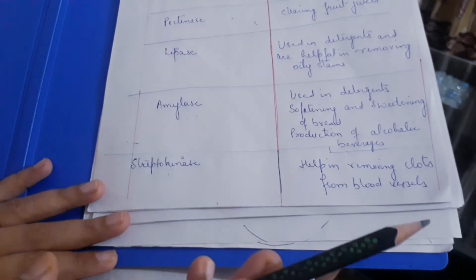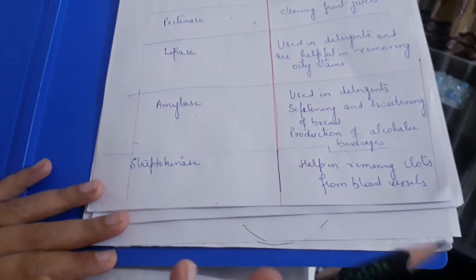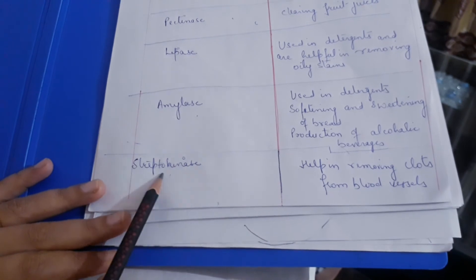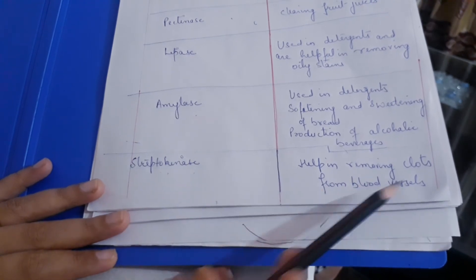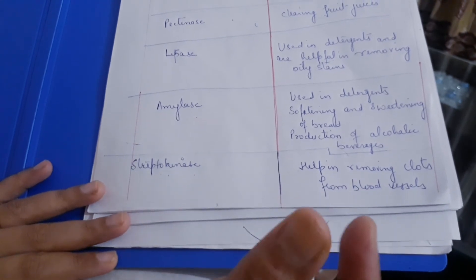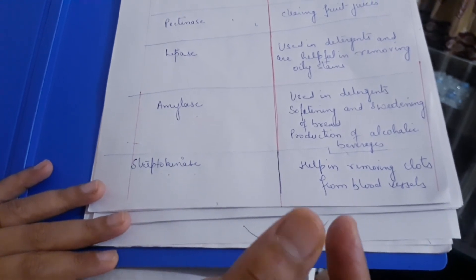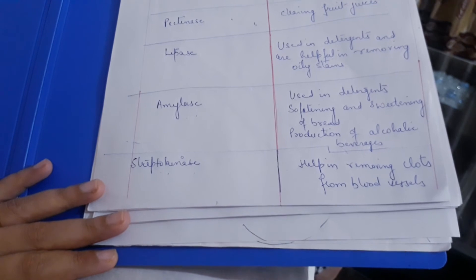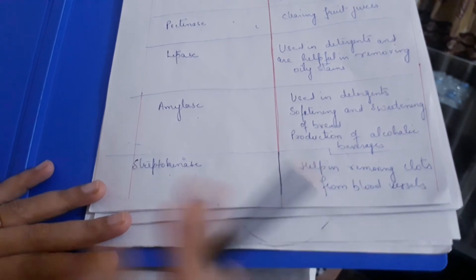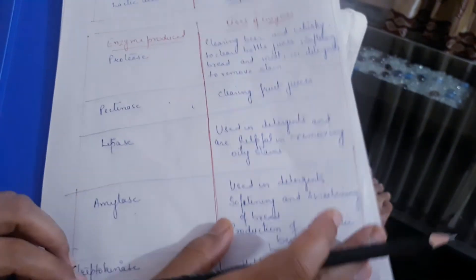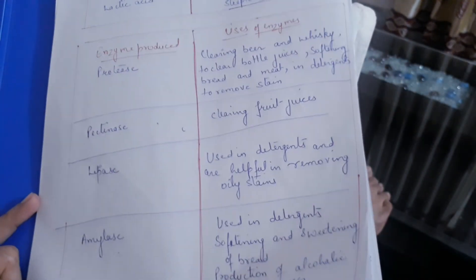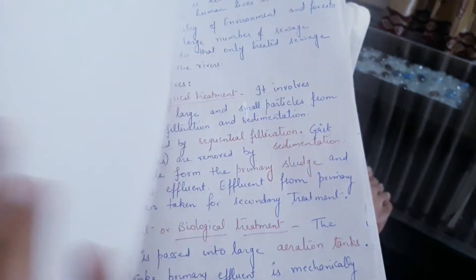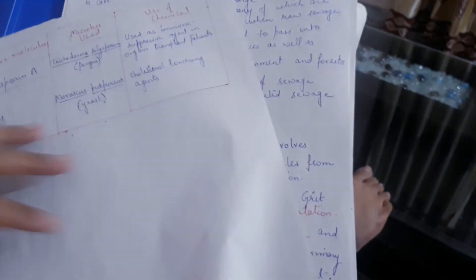We also studied invertase earlier. Streptokinase is an enzyme used to remove blood clots — when blood coagulates and forms a clot, streptokinase is used to dissolve it.